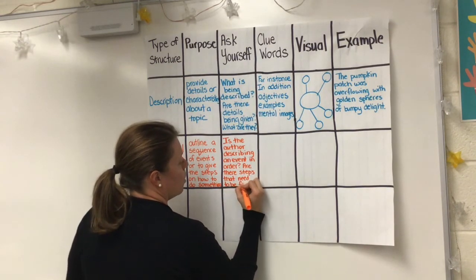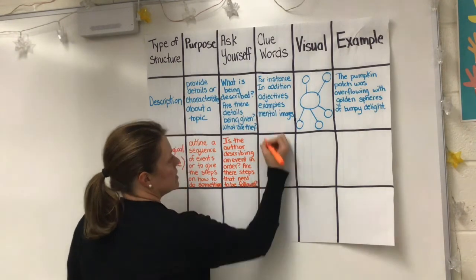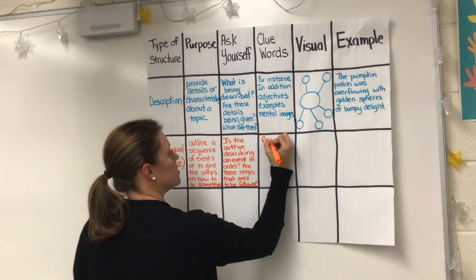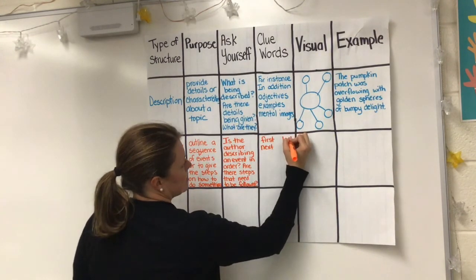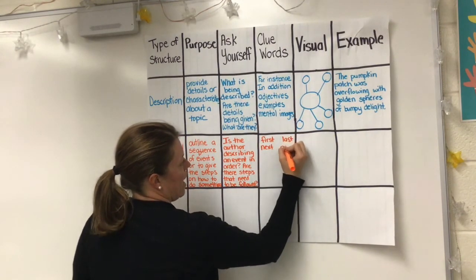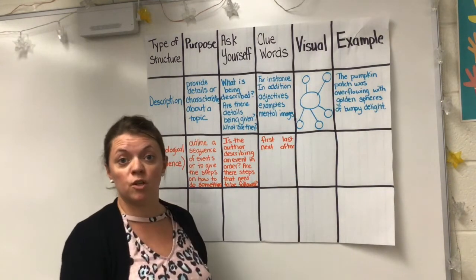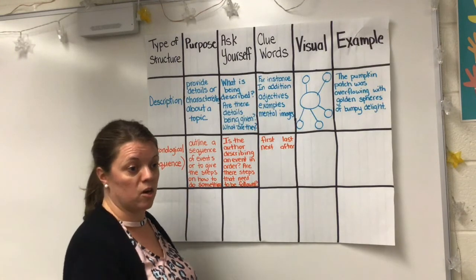A lot of times you'll see clue words such as first, next, last, after, etc. Those will give you clues that you're looking at a sequence or chronological text structure.